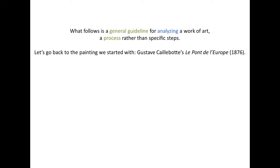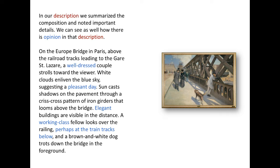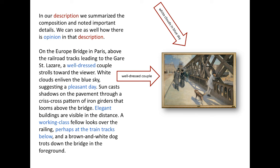What follows is a general guideline for analyzing a work of art, a process rather than specific steps. Let's go back to the painting we started with, Gustave Caillebotte's Le Pont de l'Europe, 1876. In our description, we summarized the composition and noted important details. On the Europe Bridge, in Paris, above the railroad tracks leading to the Gare Saint-Lazare, a well-dressed couple strolls toward the viewer. White clouds enliven the blue sky, suggesting a pleasant day.